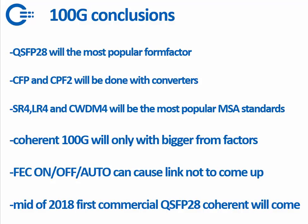So these are my conclusions. The QSFP28 is the most popular platform right now. The CFP and CFP2 will be handled with converters in the future to cut down pricing. The most popular MSAs are the SR4, LR4, and CWDM4 — and those are also what we will offer to our clients. Coherent 100 gig will only be possible with bigger form factors like the CFP, and maybe CFP2 shortly, but the QSFP28 will take a while. FEC on, off, or auto is important if your link doesn't come up, so investigate whether your switch supports toggling it. We're expecting mid-2018 for the first commercial QSFP28 coherent optics. Thank you very much.